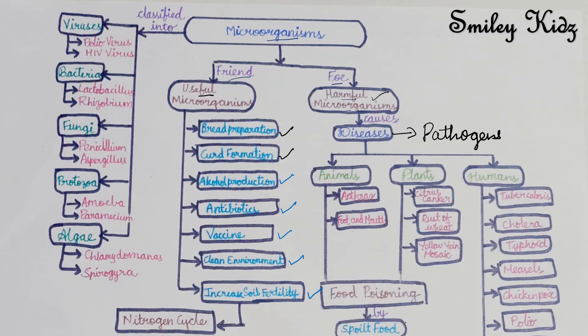These microorganisms cause diseases in animals, plants, and humans too. Animal diseases: at first we have anthrax. Anthrax is a dangerous human and cattle disease caused by a bacterium. Plant diseases: next comes foot and mouth. Foot and mouth disease of cattle is caused by a virus.